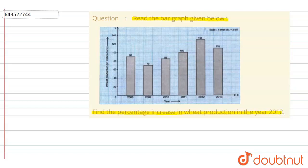We are given year on the x-axis and the wheat production in million tons on the y-axis. So to find the percentage increase, we would be having a certain formula.